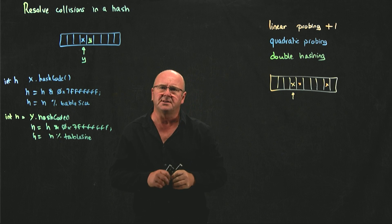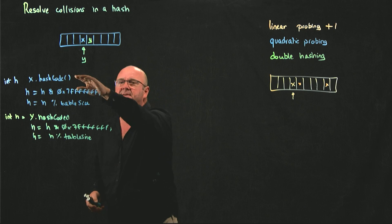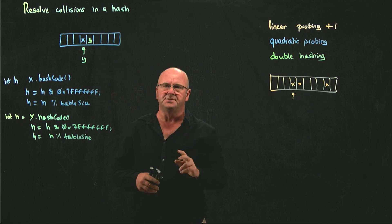There's another approach called double hashing. And in double hashing, the way that it works is we have not one hash code function for our object, but two different ones.